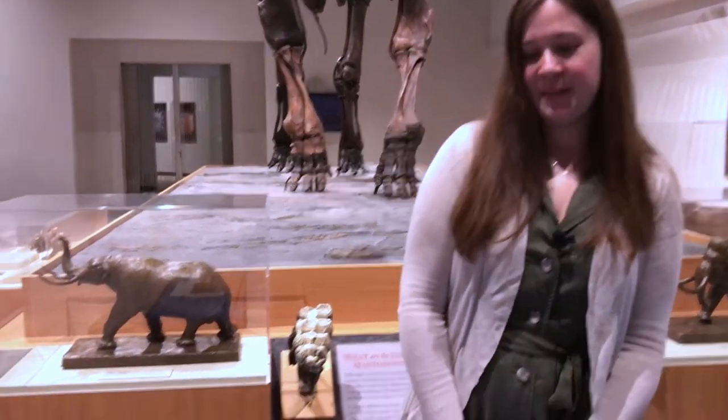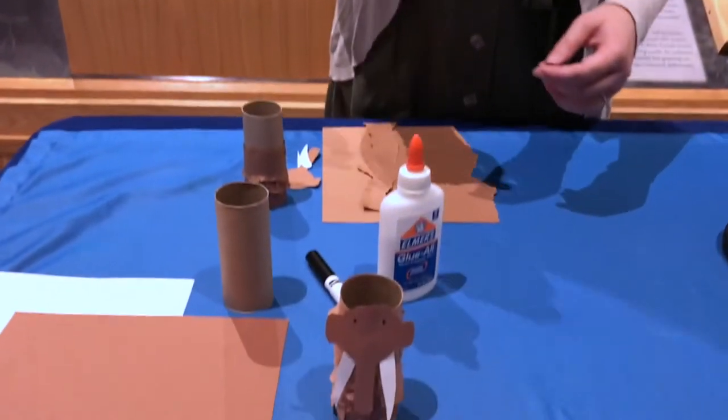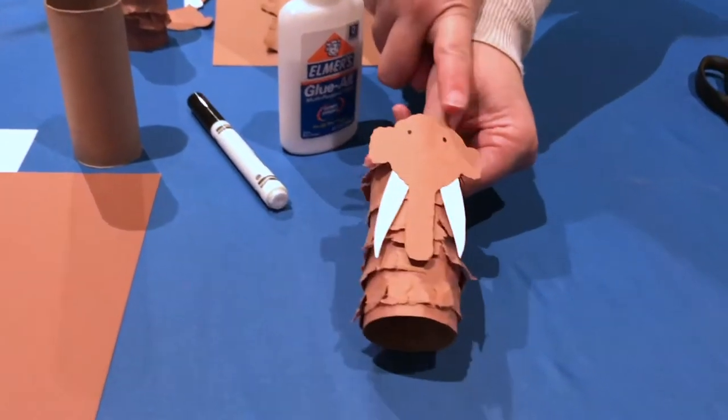So I have a few craft activities today depending on how ambitious you are and what kind of materials you have at home. We're going to make a mastodon and a mammoth. So the first one I have is a mastodon, and we can tell because it's got a nice flat head here.